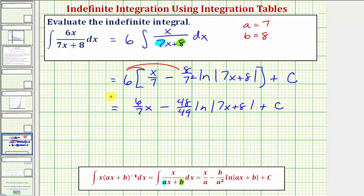This would be our antiderivative, which means the derivative of this family of functions would be equal to the integrand function, f of x equals six x divided by the quantity seven x plus eight. I hope you found this helpful.